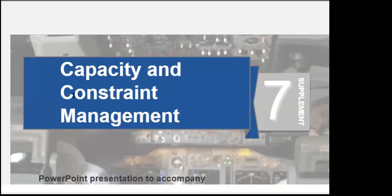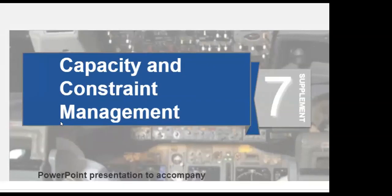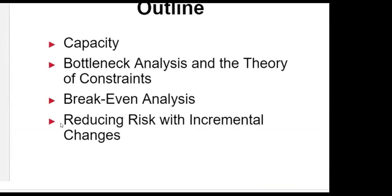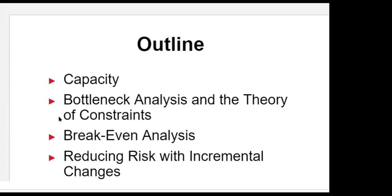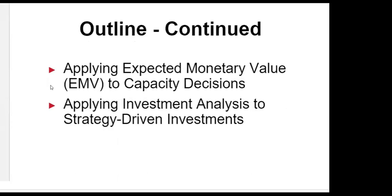Hi everyone. Today we'll go over Chapter 7S, and the topic we'll talk about is capacity and constraint management. The outline for this topic includes capacity, bottleneck analysis and theory of constraints, break-even analysis, reducing risk with incremental changes, applying expected monetary value (EMV), and applying investment analysis to strategy-driven investments.